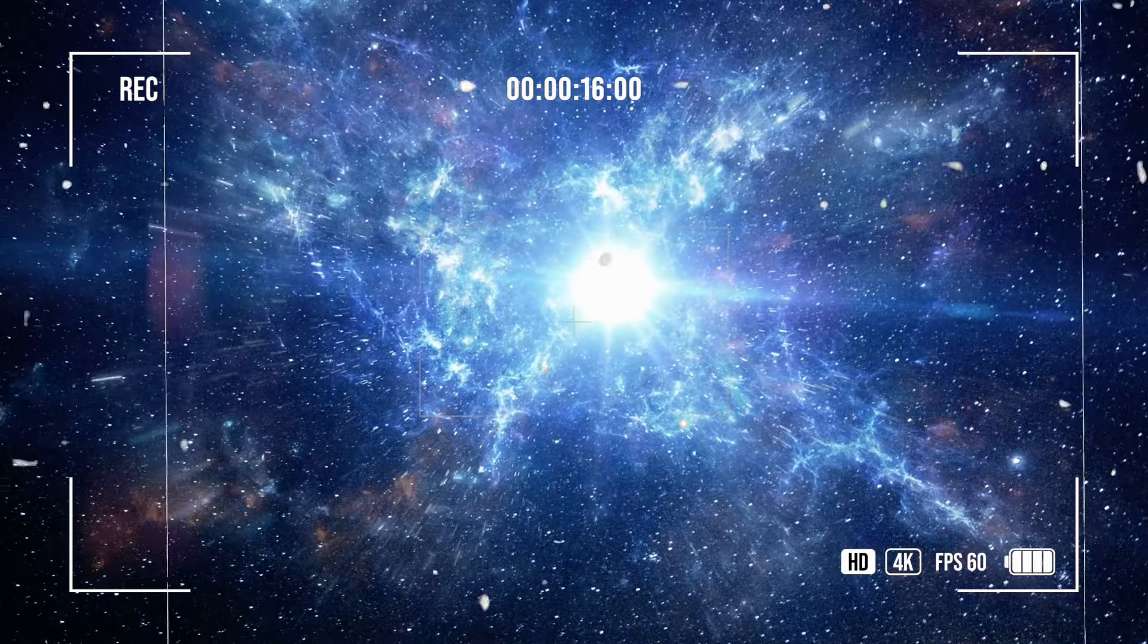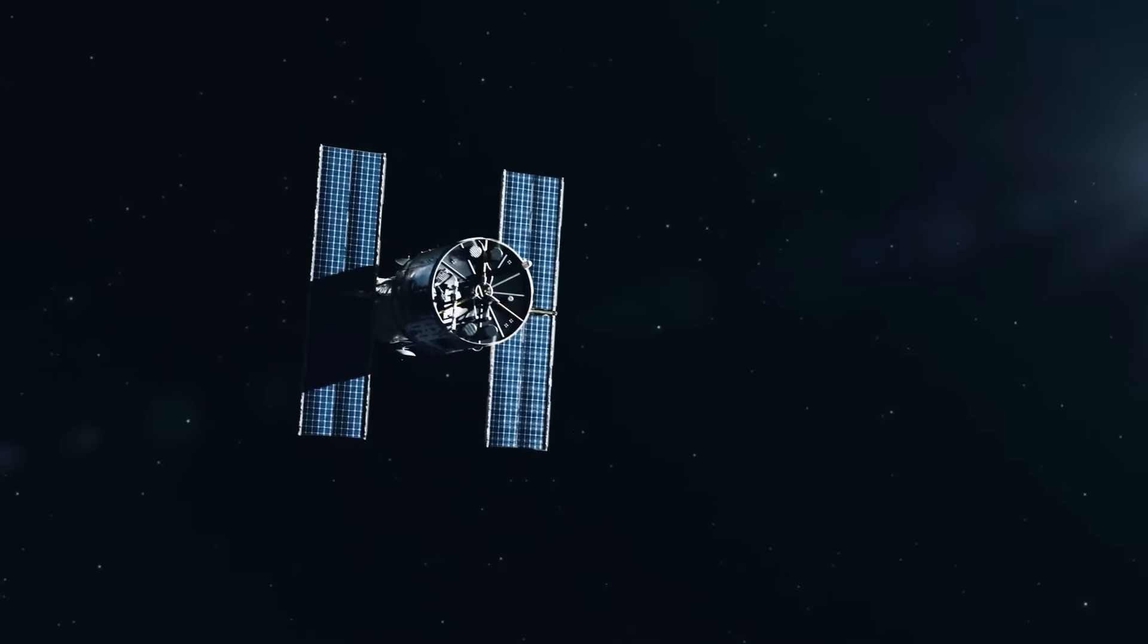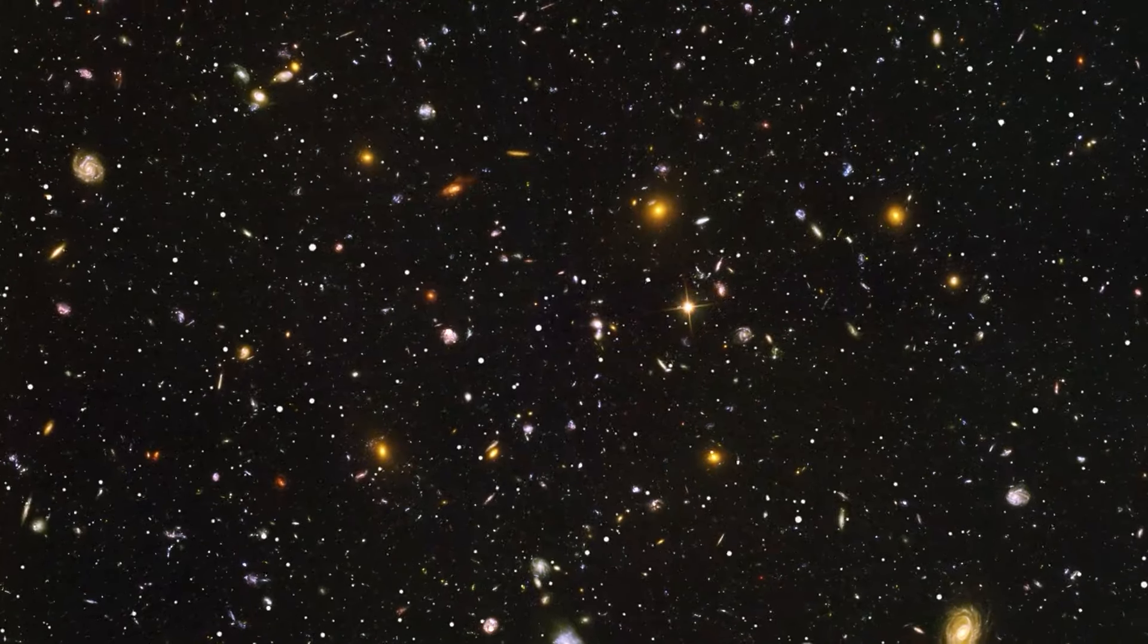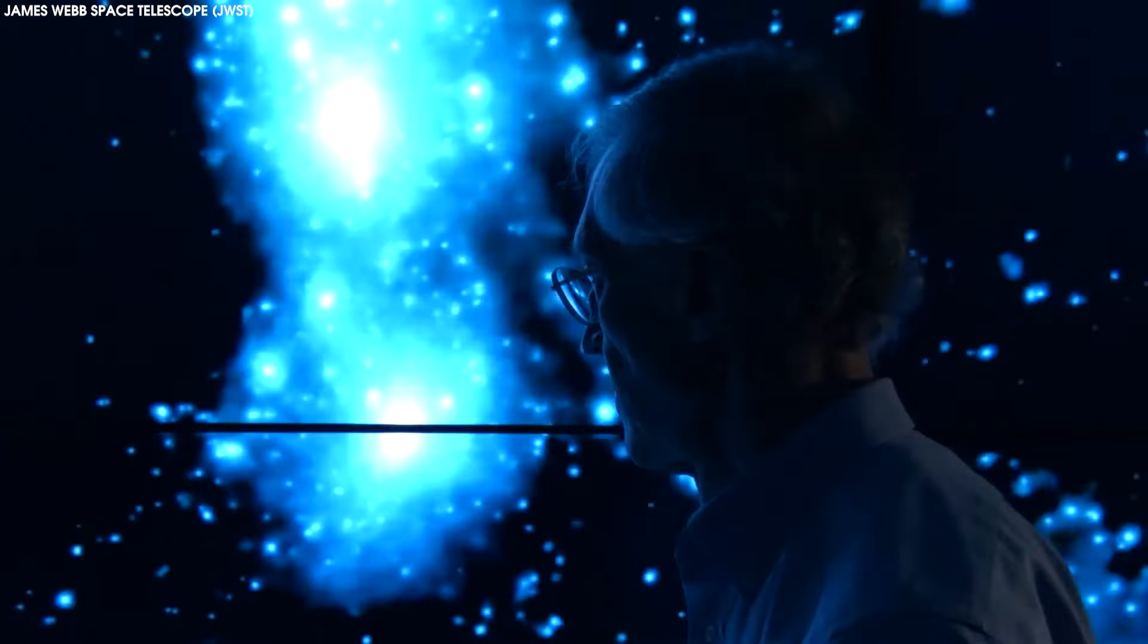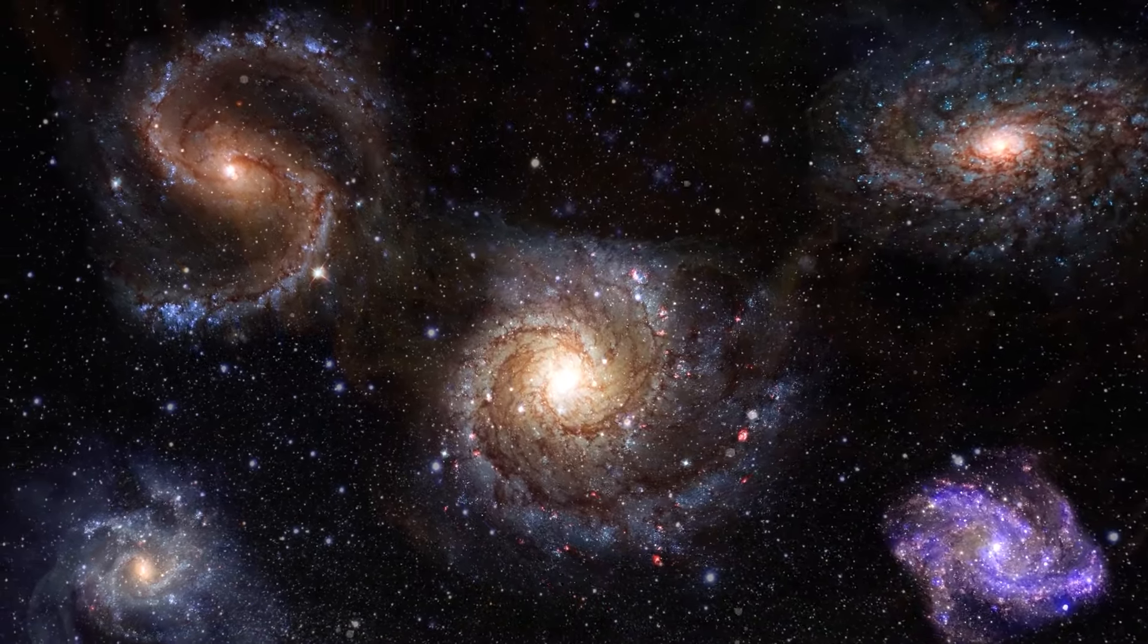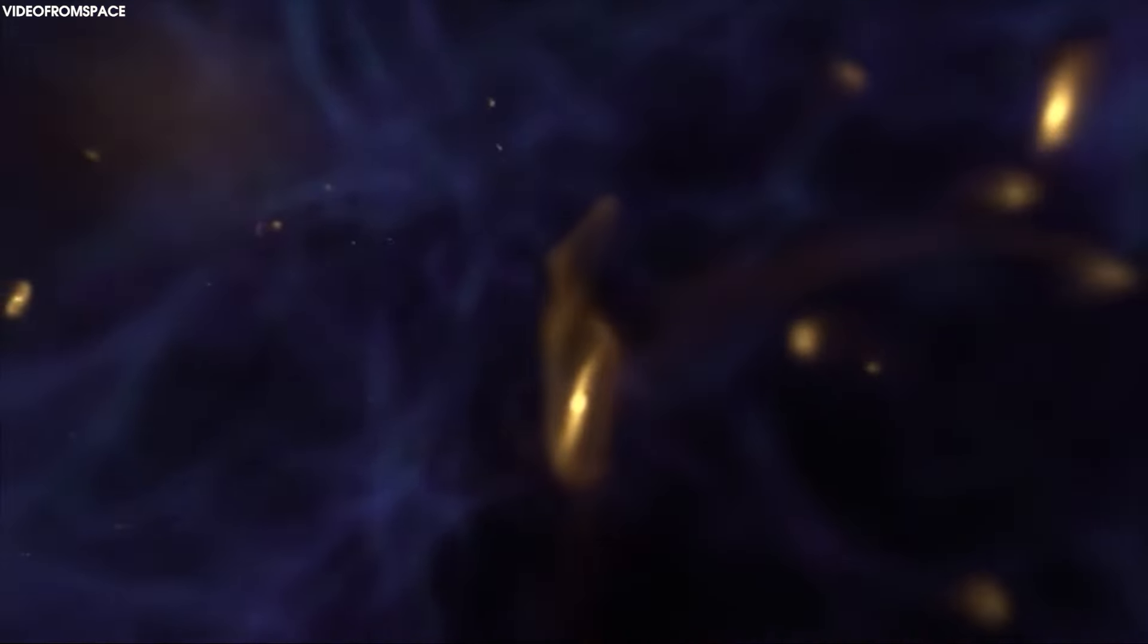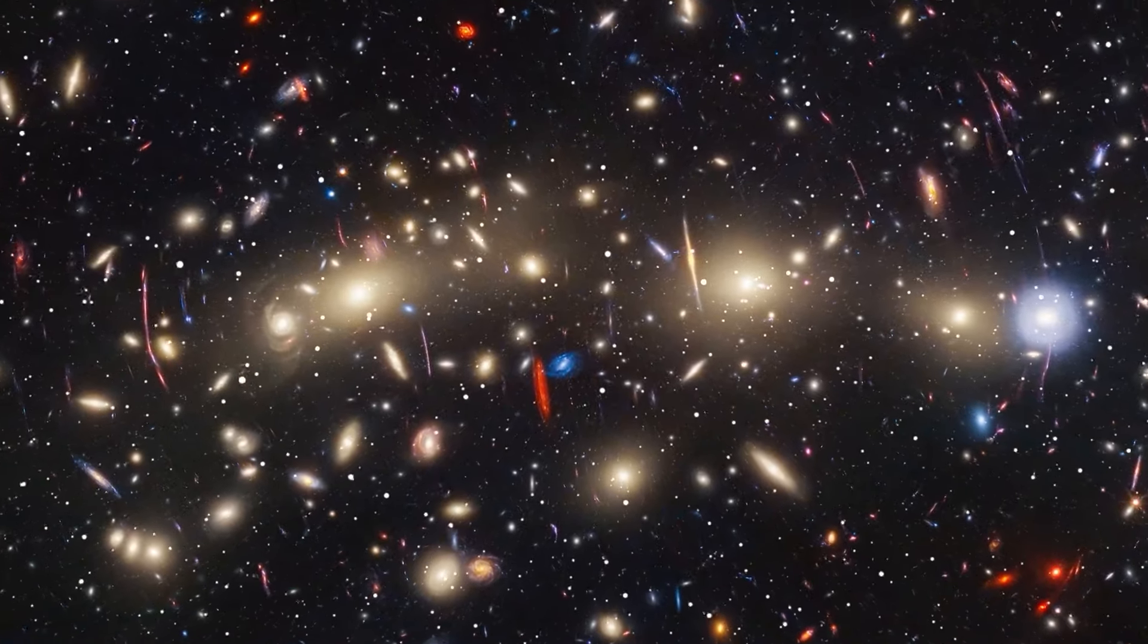Not until the 1920s did humanity identify these glowing clouds as galaxies, when the astronomer Edwin Hubble, relying on the work of a lesser-known astronomer Henrietta Leavitt, found that some stars were too far away to belong to the Milky Way. And only in the mid-1990s, when a space telescope named for Hubble peered farther into the universe than ever before, did we find the thousands of galaxies shimmering across the universe, island after island in a vast cosmic sea.